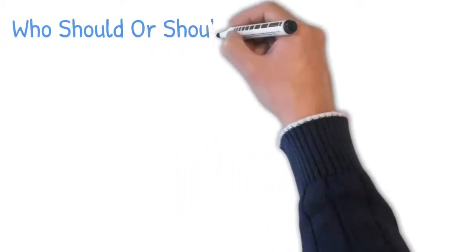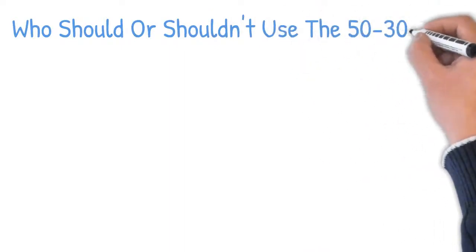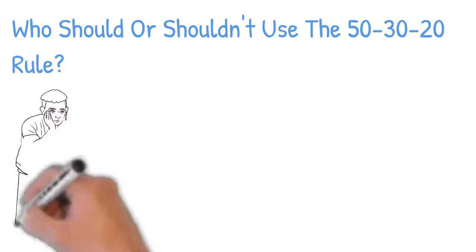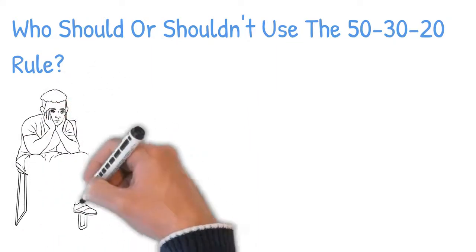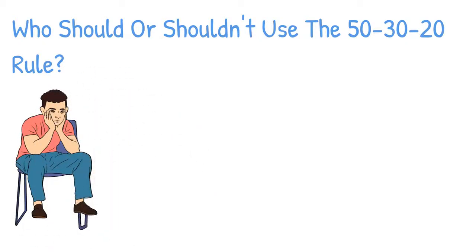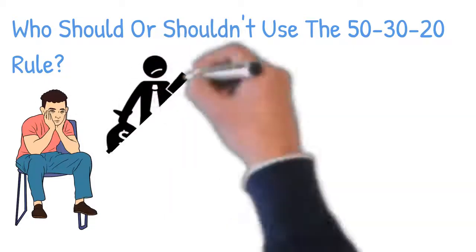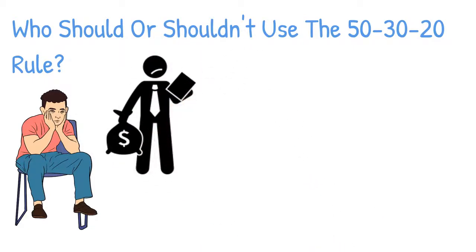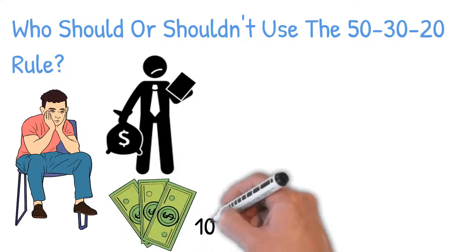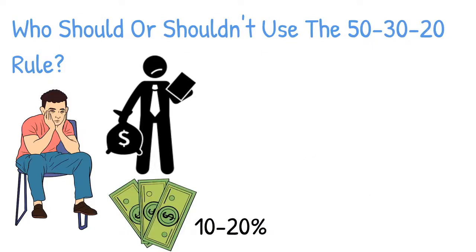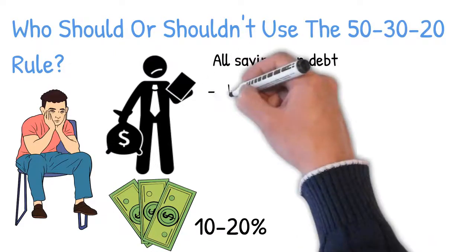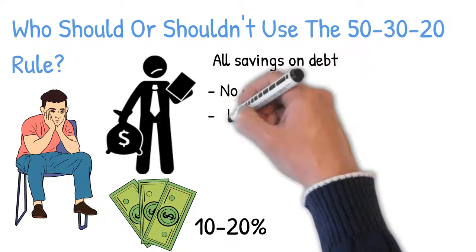Who should or shouldn't use the 50-30-20 rule? Is the 50-30-20 rule for everyone? Of course not. The budgeting formula, for one, may not suit someone on a small paycheck or a high cost of living. That's because these people are likely to spend more than 50% of their after-tax income on basic needs. Also, guys with large debts may find it hard to pay down what they owe using this formula. Most large debts require a minimum payment that takes about 10-20% of what you take home. So you may end up using all your savings on debt, and that will leave you with no emergency fund or investment.